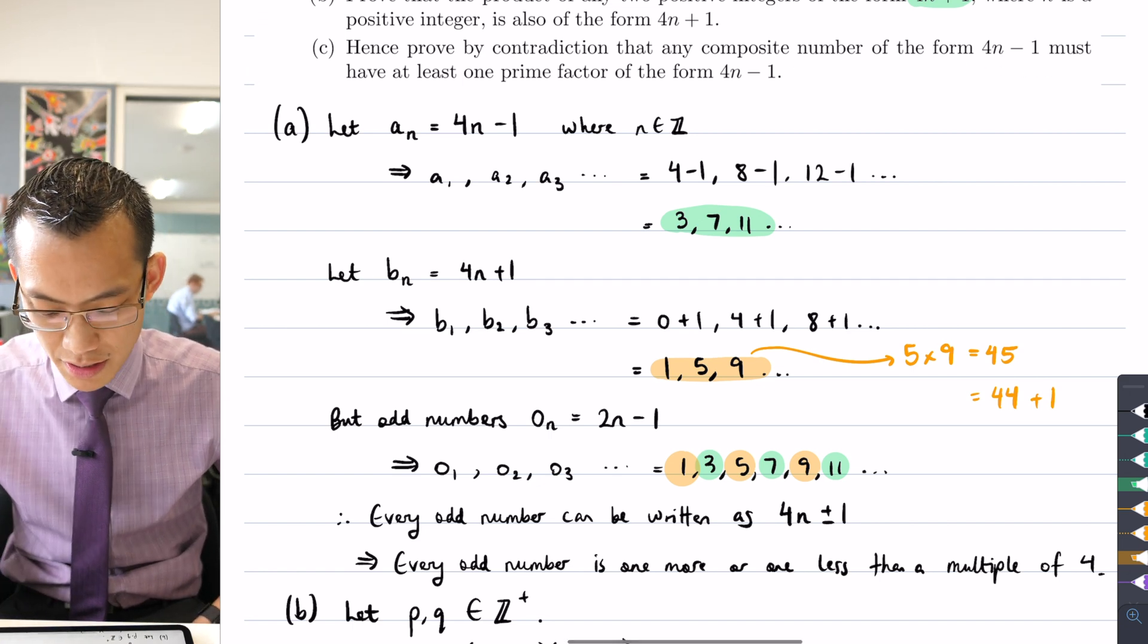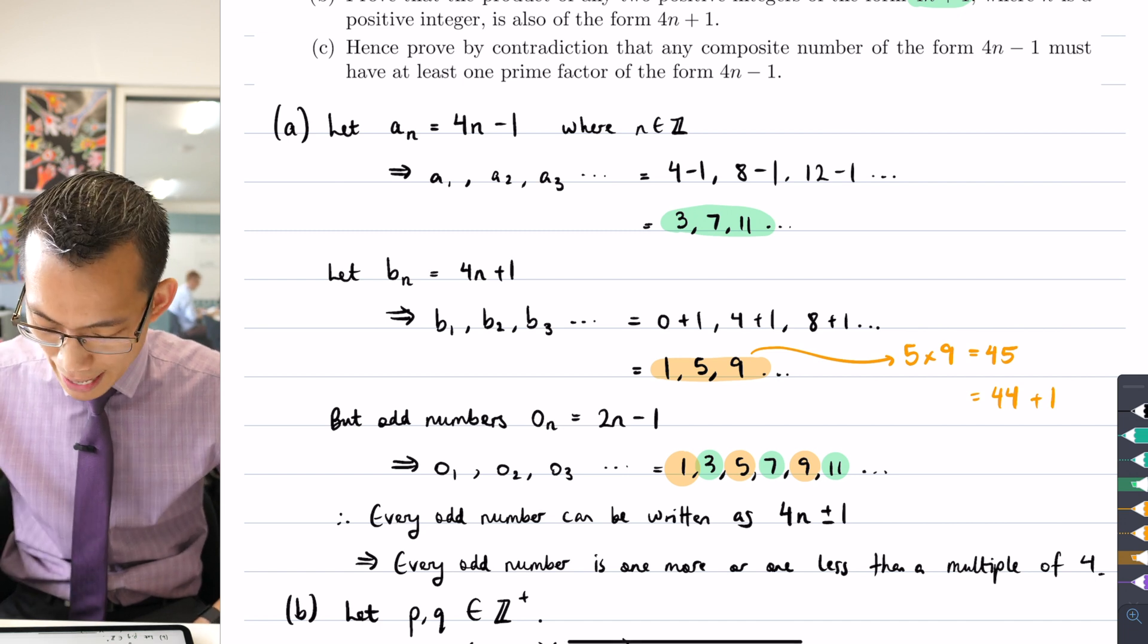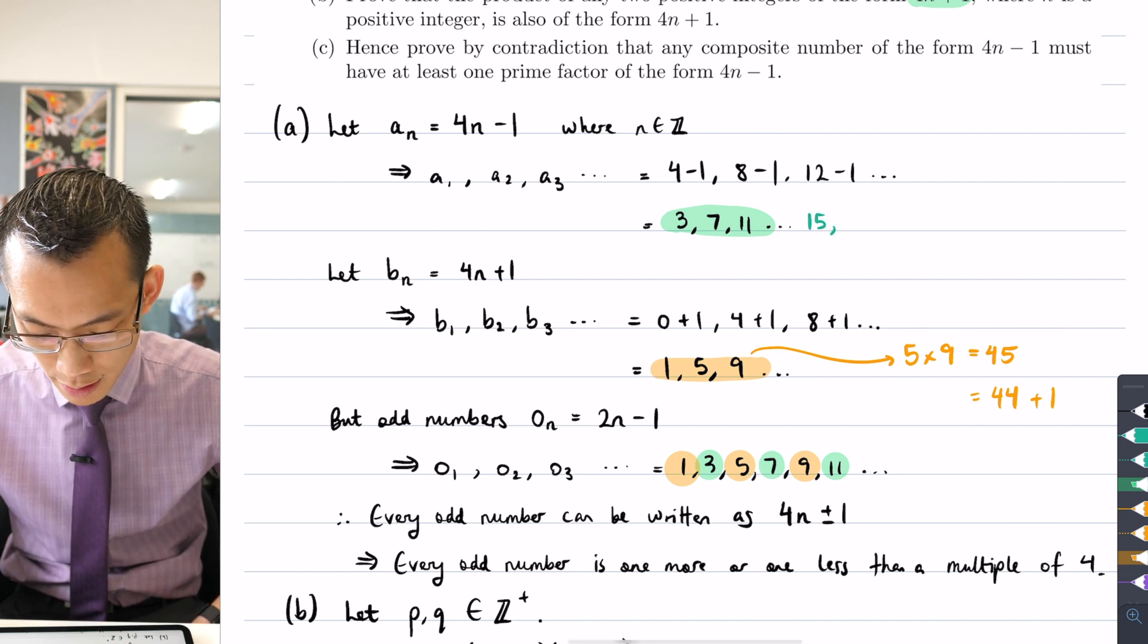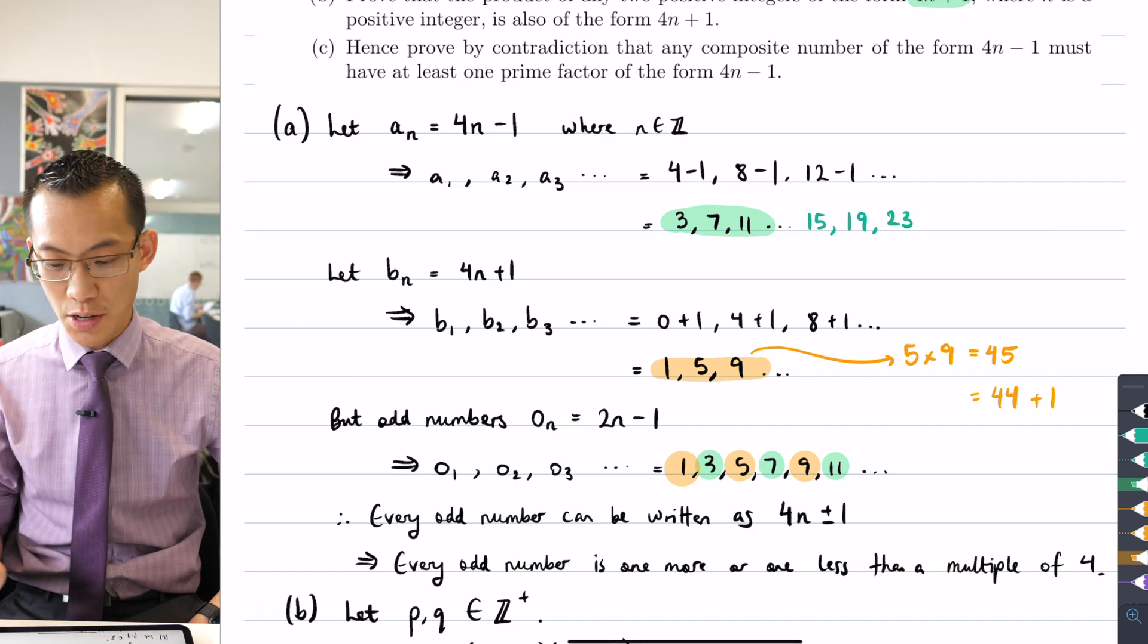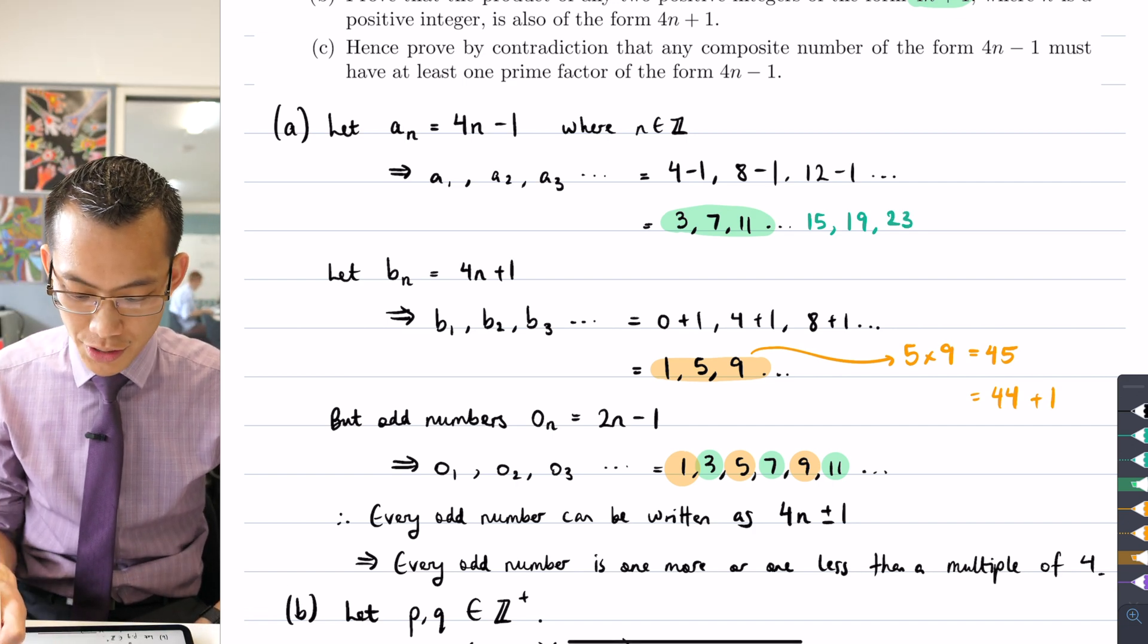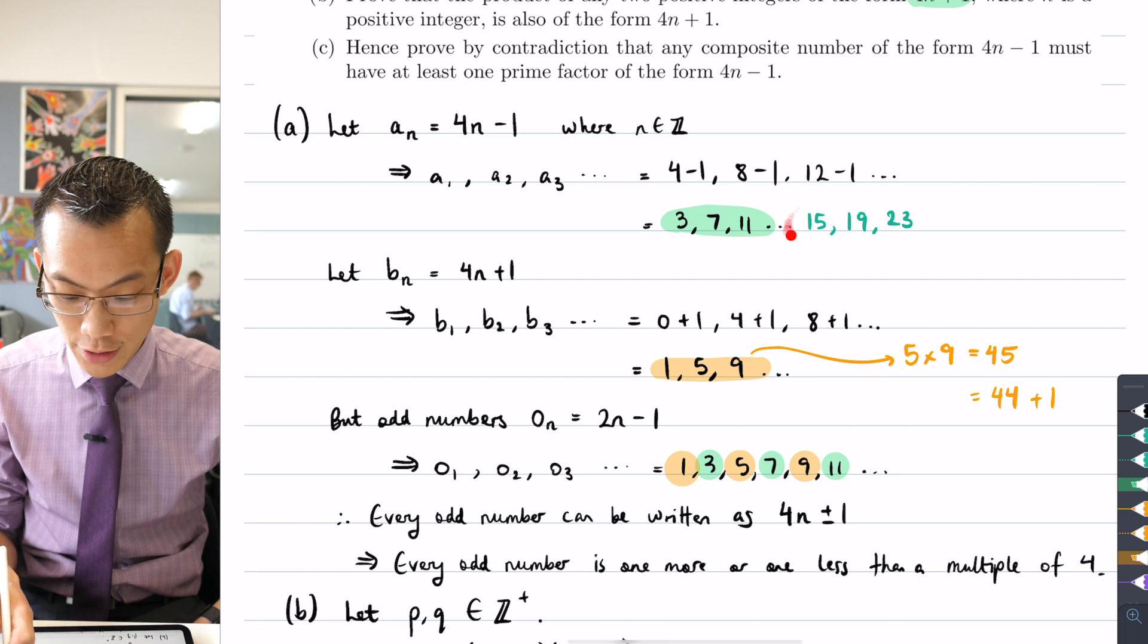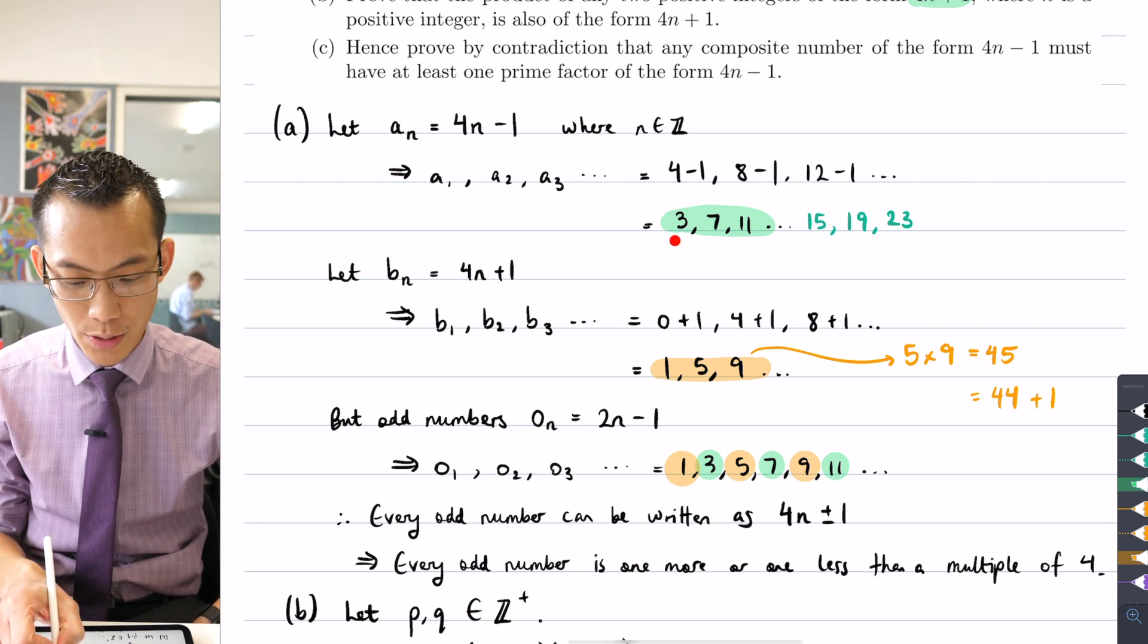So let's just go a little bit further. You can see I'm adding 4 each time so the next one will be 15 and then 19 and then 23. It just so happens that in this whole list, the only one that I'm interested in here is going to be 15. That's the only composite number that I've written down in this sequence.